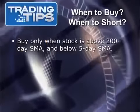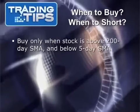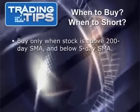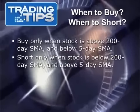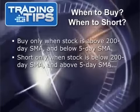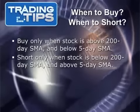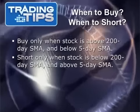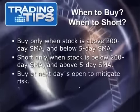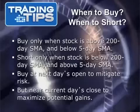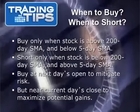The question is when to buy or when to short. We're looking for buys only when the stock is above its 200-day moving average and below its 5-day moving average. Conversely, we're looking to short only when the stock is below its 200-day moving average and above its 5-day moving average. In the former case, we're looking for a stock in an uptrend that's momentarily oversold; in the latter, a stock in a downtrend that's temporarily overbought. Connors gives two options for entry: for more risk-averse traders, enter at the next day's open; for a more aggressive strategy, buy as close to the current day's close as possible.